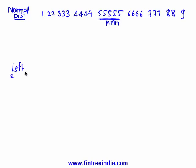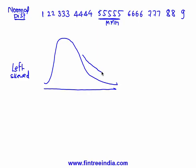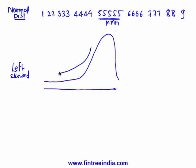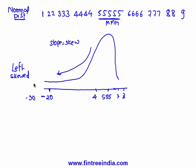A left-skewed distribution has its slope directed toward the left — 'skew' and 'slope' are essentially the same concept. In terms of numbers, if the mean is around 5 with high frequency, but you also have a large negative value like minus 20 or minus 30, the data gets pulled toward the left. That is why we call it left-skewed data. In a left-skewed distribution, mean is less than median, which is less than mode, because of those extreme large negative values.